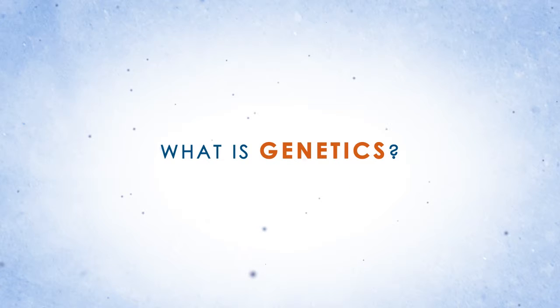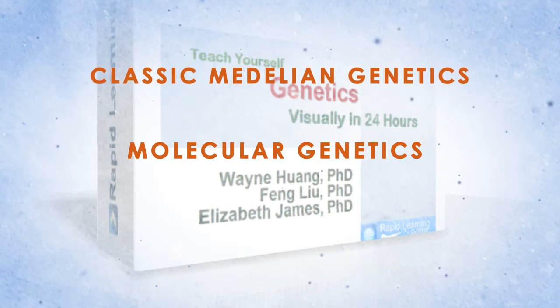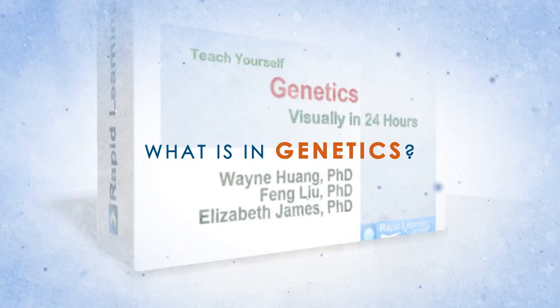Genetics is a science of genes, heredity, and variation in living organisms. This rich media course introduces all areas of classic Mendelian genetics, molecular genetics, population, and evolutionary genetics. There are 24 chapters to cover, each and every topic visually.